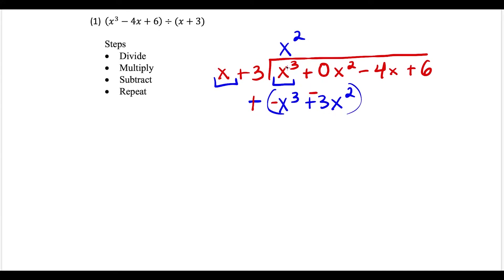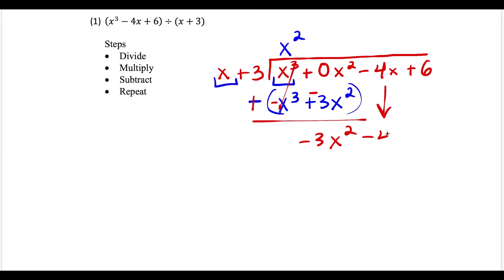So now we have x to the third minus x to the third — that cancels. And we have 0 plus negative 3, giving us negative 3x squared. Now we drag down the minus 4x, and the process repeats all over again.